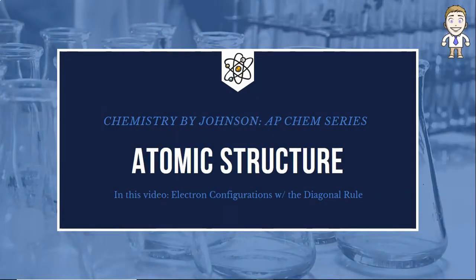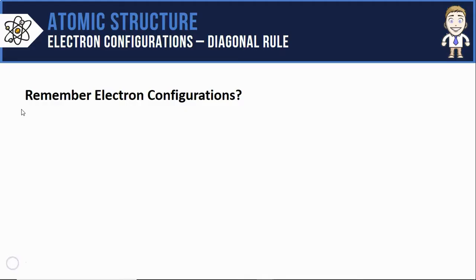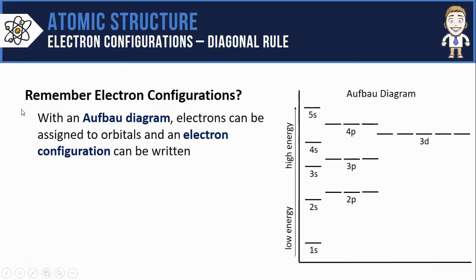Hey everyone, in this AP Chem series video, we're going to take a look at how to write electron configurations the quick way using the diagonal rule. First, remember that you can write electron configurations pretty easily if you had one of these things called an Aufbau diagram.